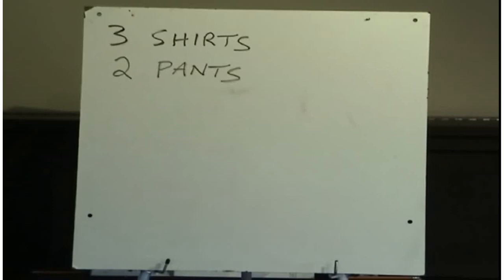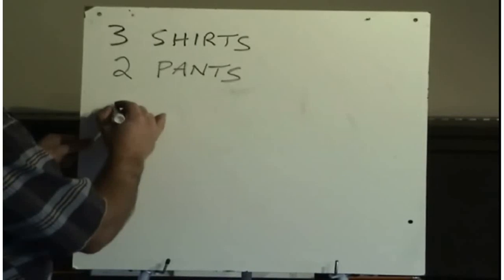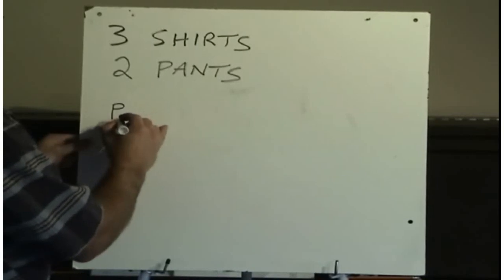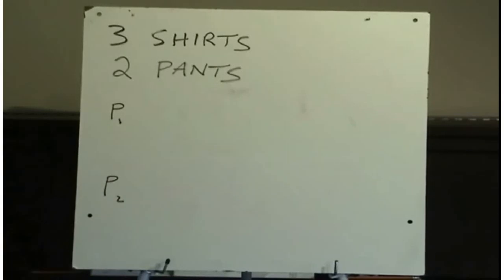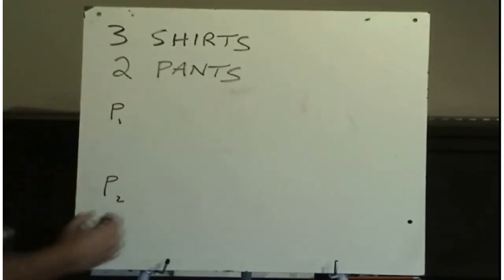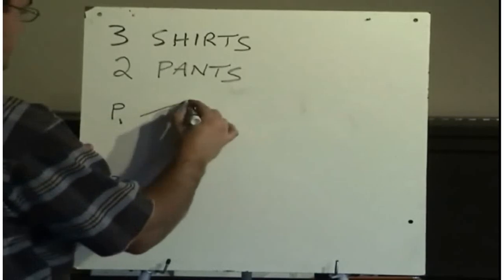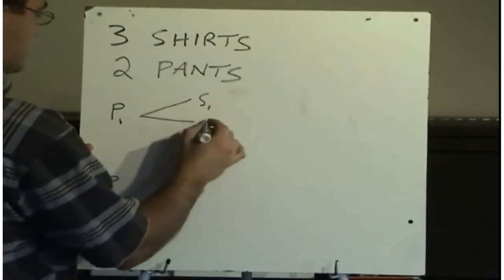Say in your closet you have three shirts and two pairs of pants, and you want to figure out the total number of possible ways of getting dressed in the morning. The slow way would be to actually consider each of the two different pairs of pants you could wear — the first pair and the second — and then note you'd have three different choices for your shirts.